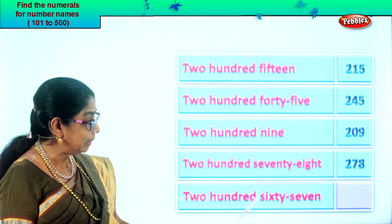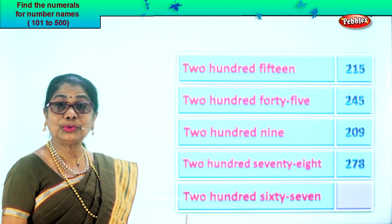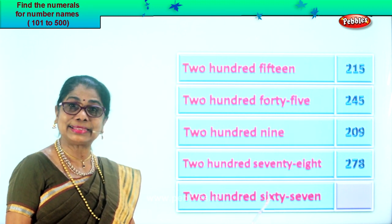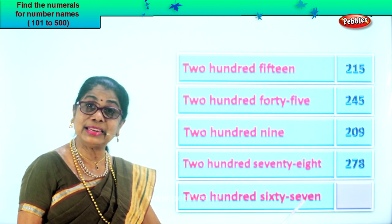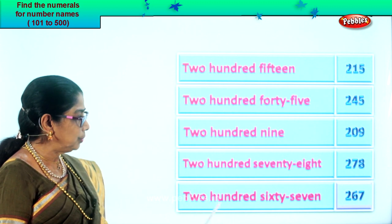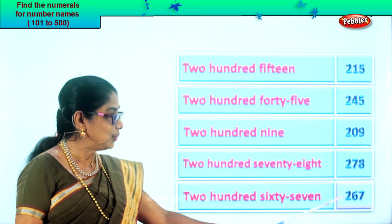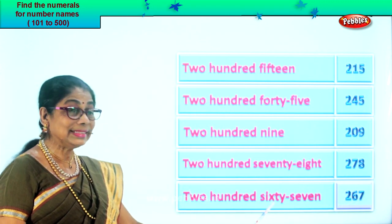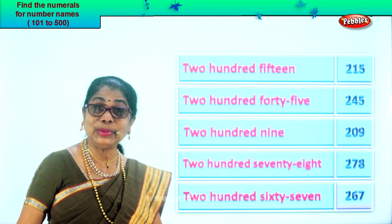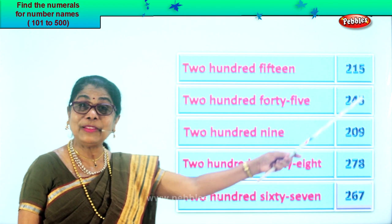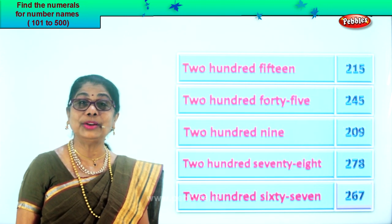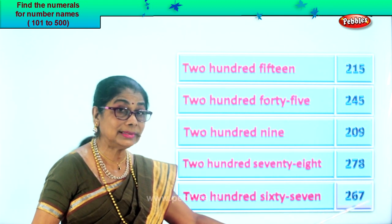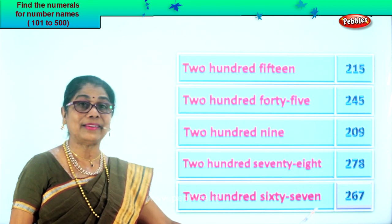Let's look at the last number name and get the numeral ourselves. Two hundred sixty-seven — two in the hundredth place, sixty-seven: six in the tens place, seven in the ones place. Two, six, seven. Two hundred sixty-seven. Do you enjoy reading the number name and filling in the correct numeral? You read the numeral and the number name the same way. Two hundred sixty-seven.